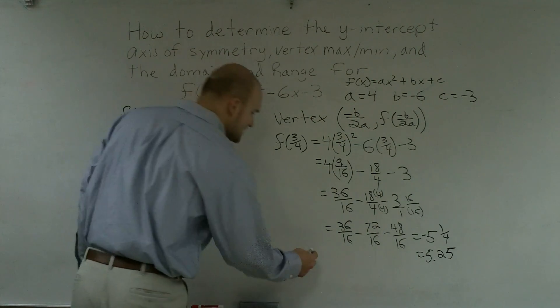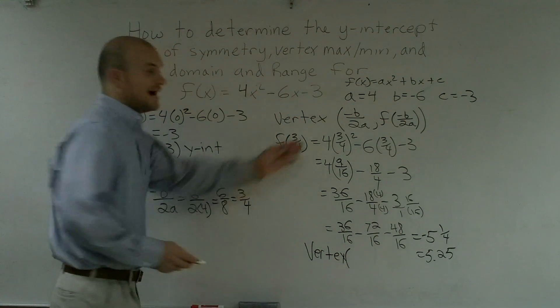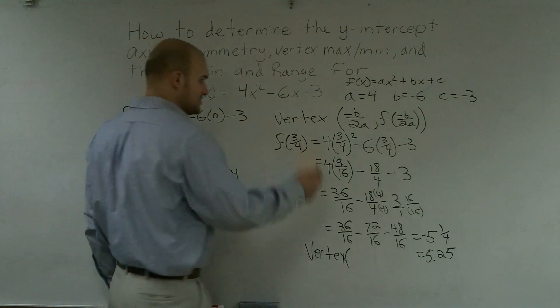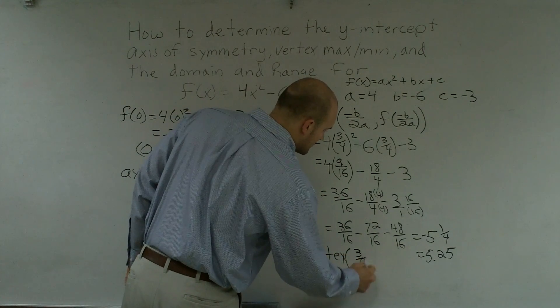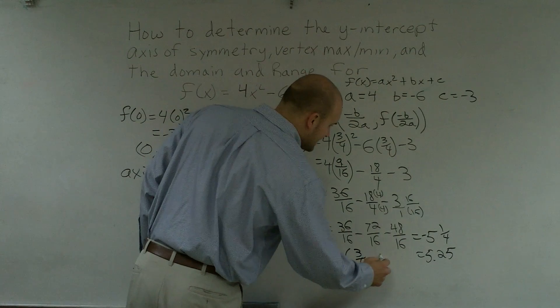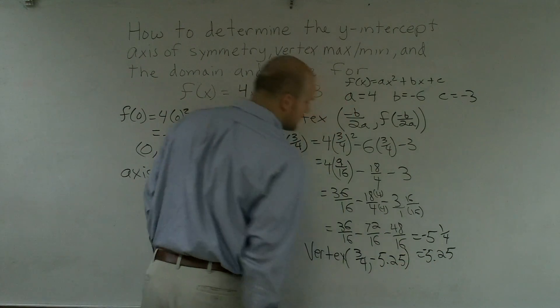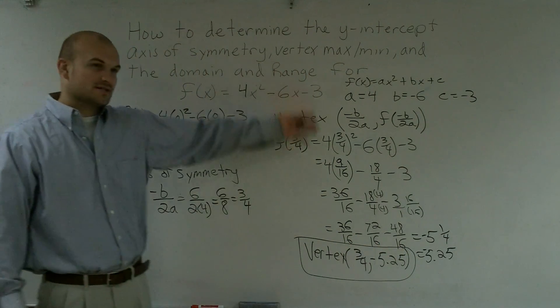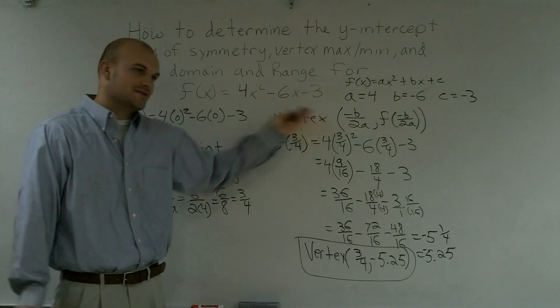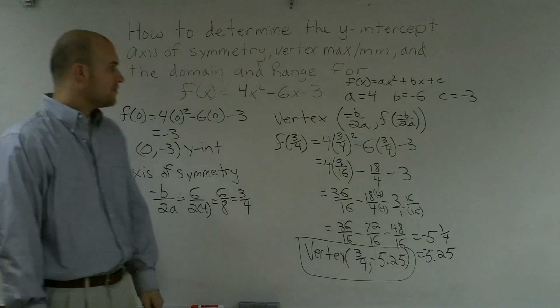So therefore, now my vertex is what the axis of symmetry is, or the line of symmetry, which is 3/4, and -5.25. That's your vertex. Yeah, I know it's a lot of work, but, you know, it's the fractions called it. Like I said, a lot of you can just put it in as a decimal and figure it out real quick.